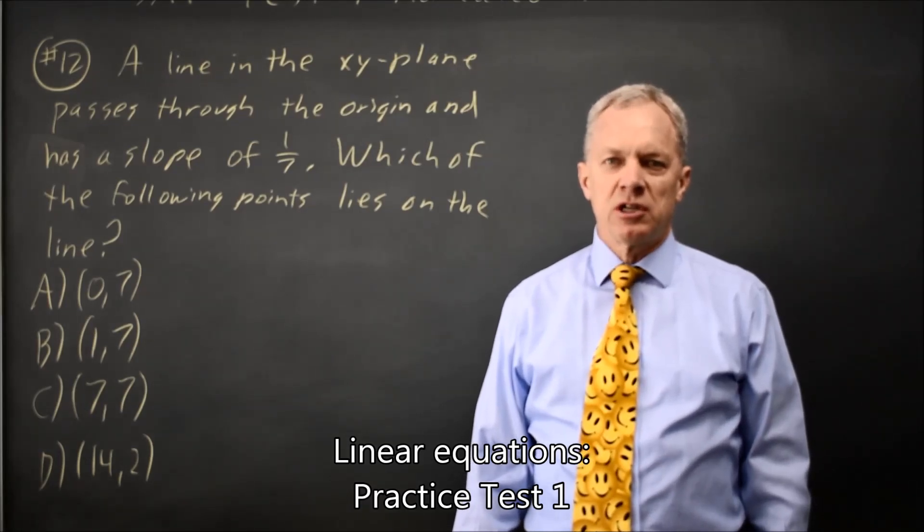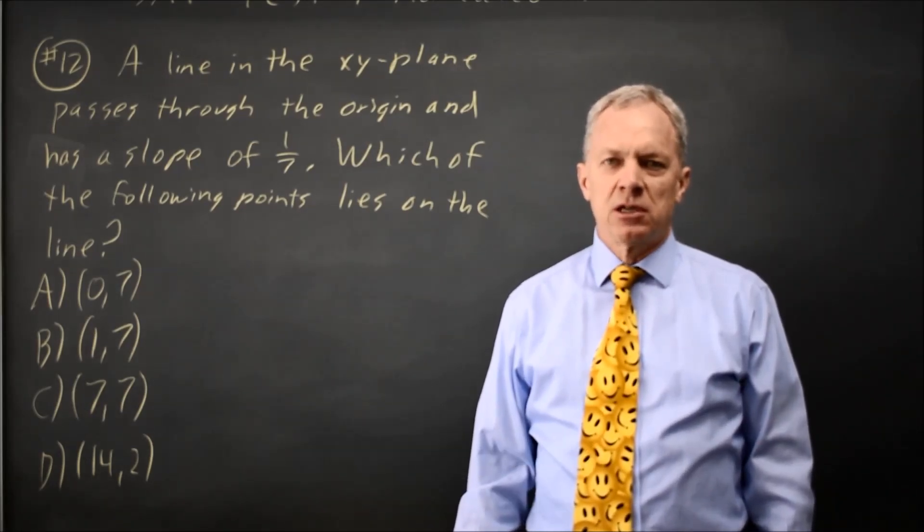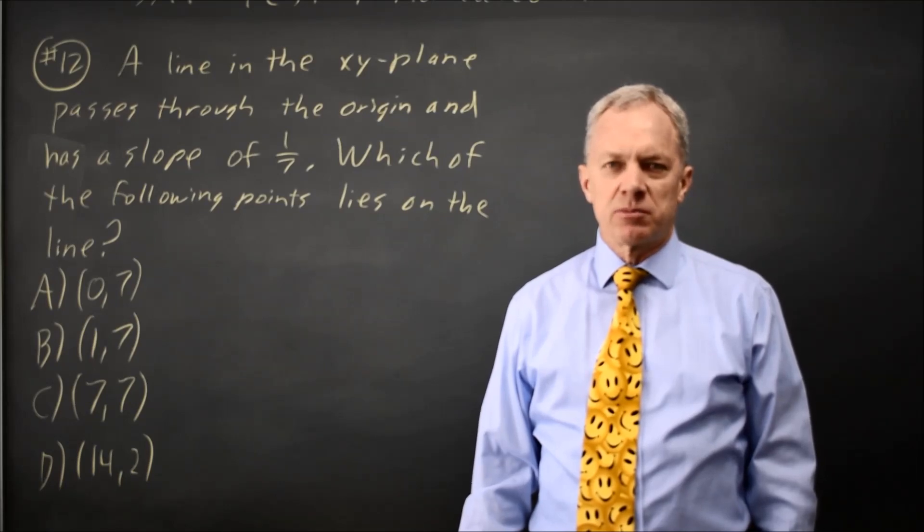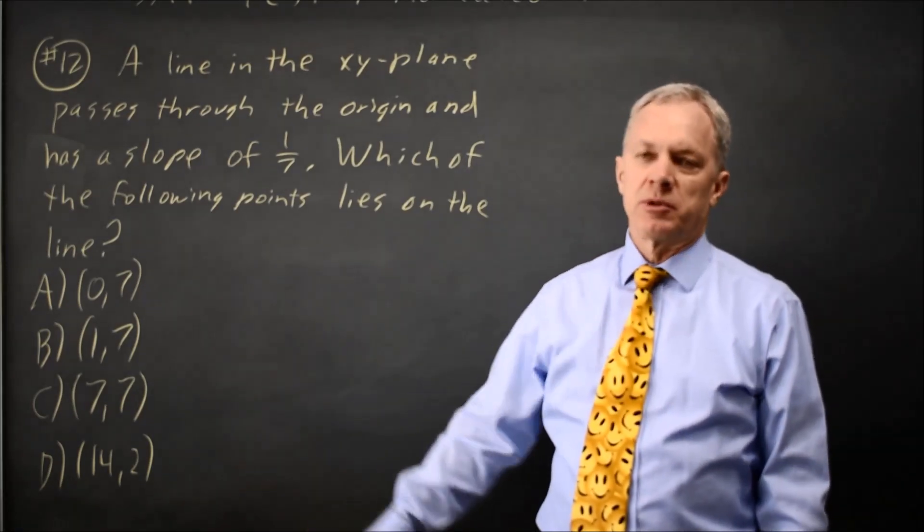This is non-calculator question number 12 from SAT Practice Test 1. College Board tells us that a line through the origin passes through another point and has slope 1 over 7, and they ask which of these points could be the other point.